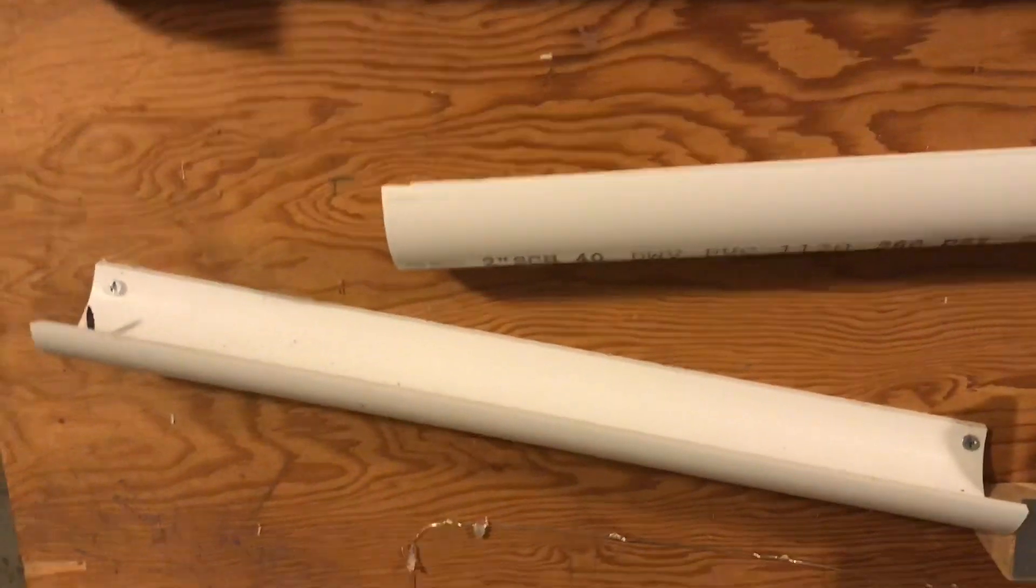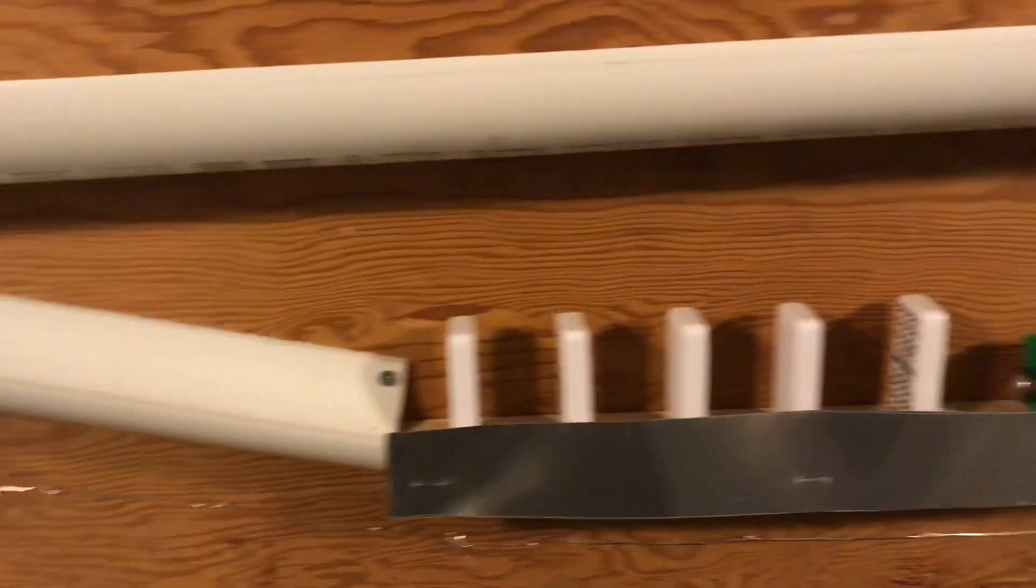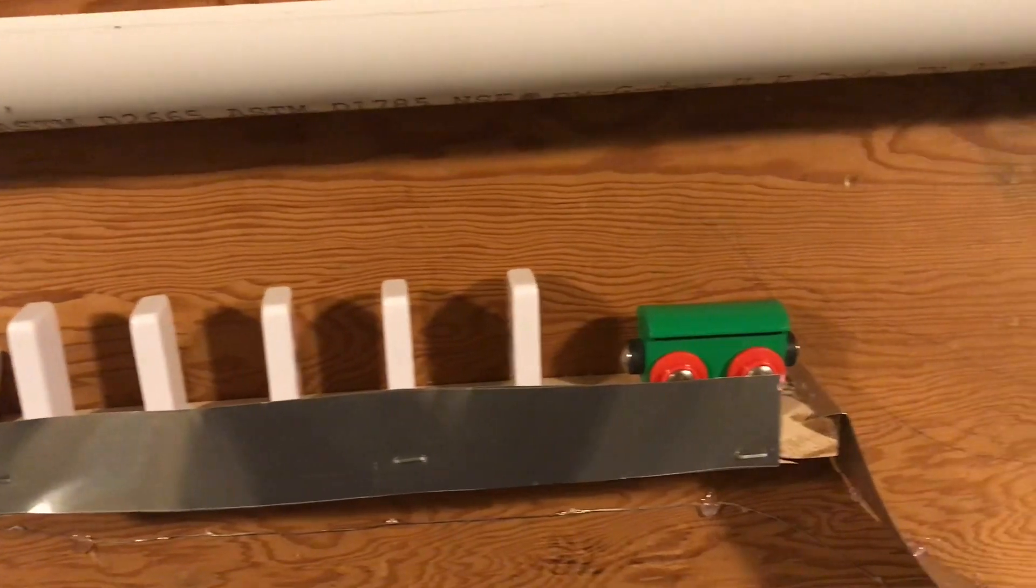Marble runs down these PVC pipes, builds up momentum through downward force, knocking over these dominoes into the toy train.